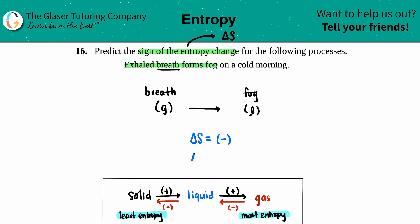If you want to say delta S is less than zero, that's fine too, but more specifically it's a negative value since they asked for the sign. Hopefully this helped — thank you, keep studying hard, good luck on your tests and quizzes!